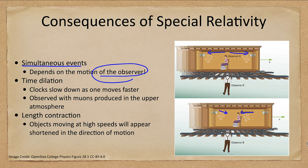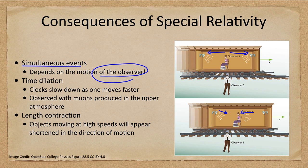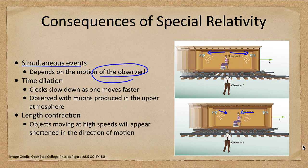It depends on the observer whether things occur simultaneously. If there's a burst of light, one observer can see them at exactly the same time, while another observer can see them not occurring at the same time.